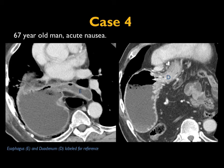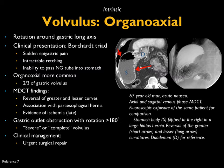Another case: patient with acute nausea. You look at this and ask yourself where exactly is the stomach, where is the esophagus, and is there a twist present? You can see the location of the duodenum versus the esophagus, and recognize this patient has a volvulus — rotation around the gastric long axis, the organo-axial type, which is more common. Clinical presentation is usually abrupt: sudden epigastric pain, intractable retching, and inability to pass an NG tube. CT findings can be tricky — you may think you're dealing with a large hiatal hernia — but notice the reversal of the greater and lesser curvature. It's commonly associated with a paraesophageal hernia.